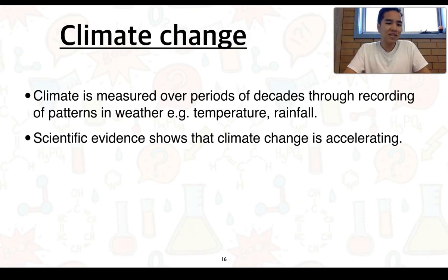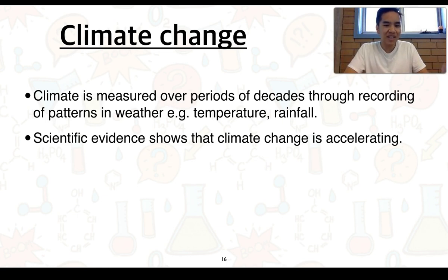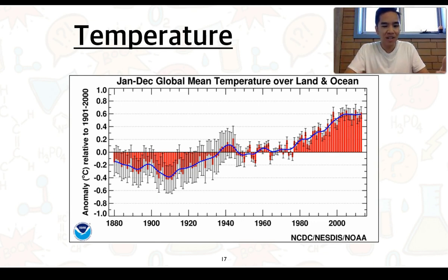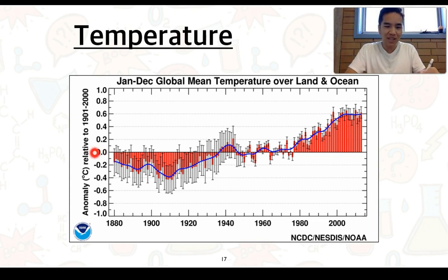We know that climate is something measured over extremely large periods of time — decades and decades. We look for general patterns in weather, such as temperature and rainfall. Scientific evidence shows that climate change is actually accelerating — changing faster and faster compared to previous occasions. Looking at scientific data, temperatures in particular have been higher than the mean from the previous century — from 1901 to 2000 — especially in the later periods, where we see generally much greater temperatures than this average, which is set as zero.